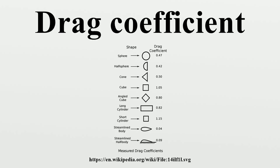The drag equation is essentially a statement that the drag force on any object is proportional to the density of the fluid and proportional to the square of the relative flow speed between the object and the fluid. C_D is not a constant but varies as a function of flow speed, flow direction, object position, object size, fluid density, and fluid viscosity. Speed, kinematic viscosity, and a characteristic length scale of the object are incorporated into a dimensionless quantity called the Reynolds number.